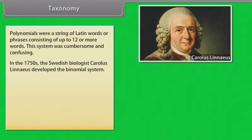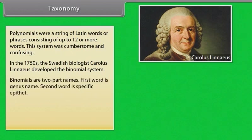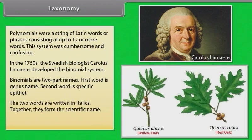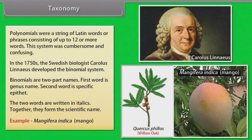In the 1750s, the Swedish biologist Carlos Linnaeus developed the binomial system. Binomials are two-part names: the first word is the genus name and the second word is the specific epithet. The two words are written in italics and together form the scientific name. Example: Mangifera indica — Mango.